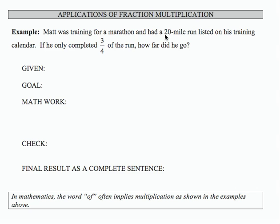So that 20 miles is one of our givens, that's probably important. 20 mile run listed on his training calendar. If he only completed 3 quarters of the run, that's how far he ran. How far did he go?